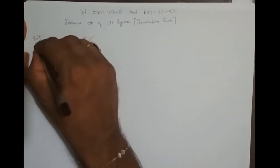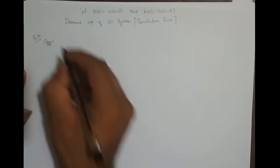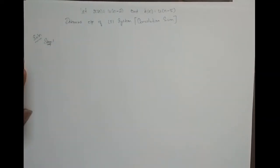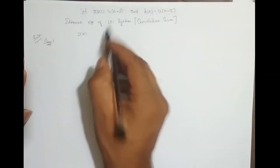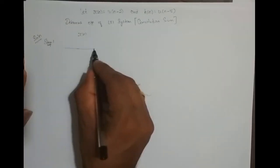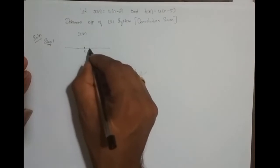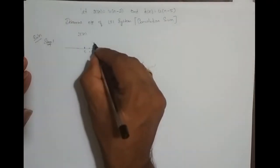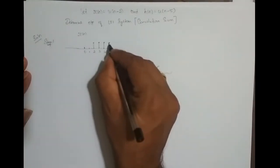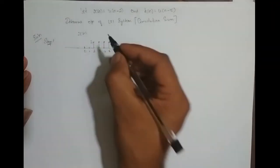Solution. Step 1 is to plot x(n) and h(-n). x(n) is u(n) shifted right 2 times, so it starts from 2 and goes to infinity, with amplitude 1. This is at n equal to 0.